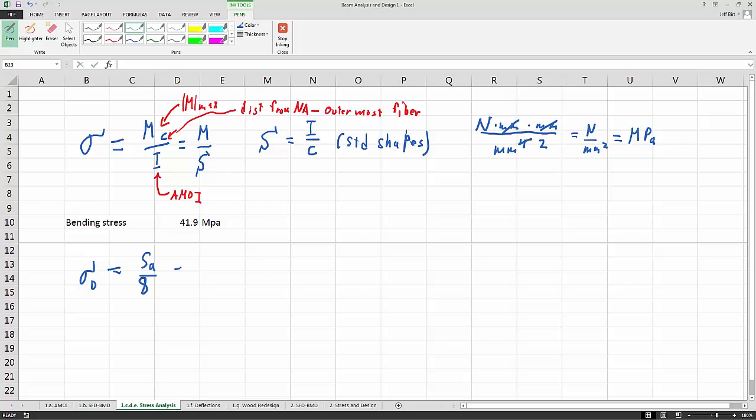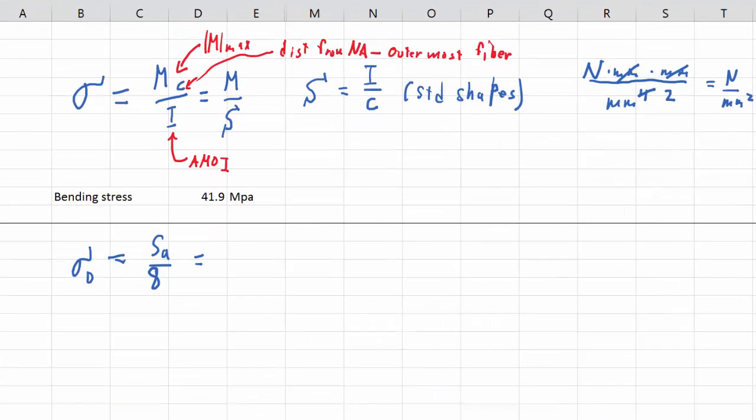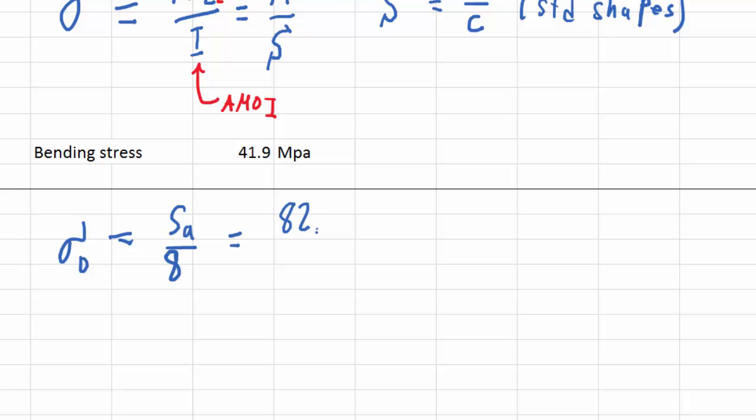And our ultimate strength, as we saw in our Micro Plastics values, is 82.7 megapascals, all divided by 8, and that gives us 10.3 megapascals. Now, what does this mean? This means that we do not want our design to go over 10.3 megapascals. There's a big problem, is that we're already at 41.9 megapascals.